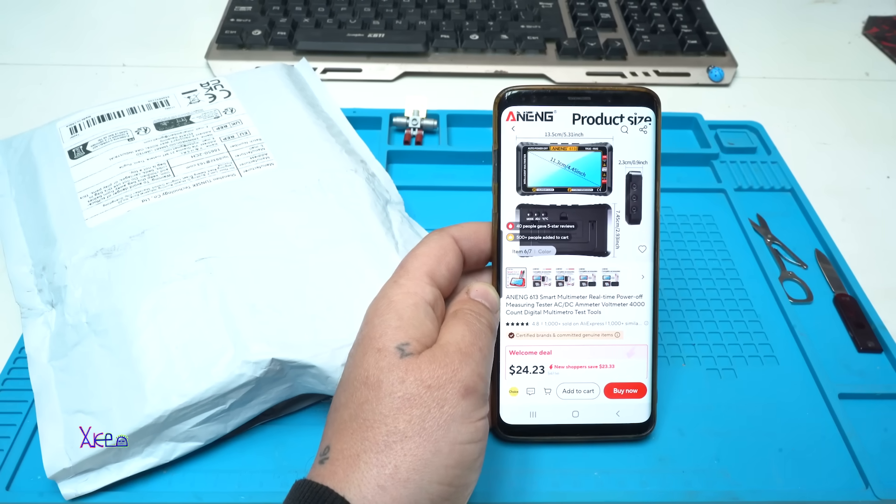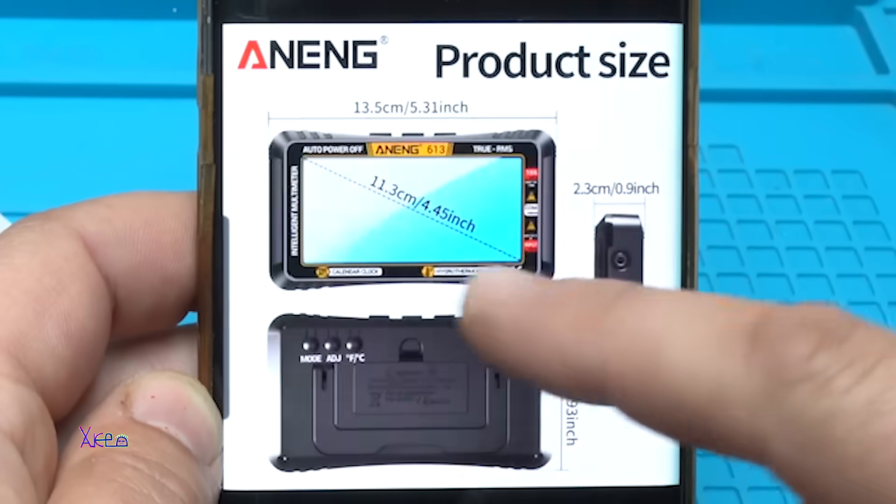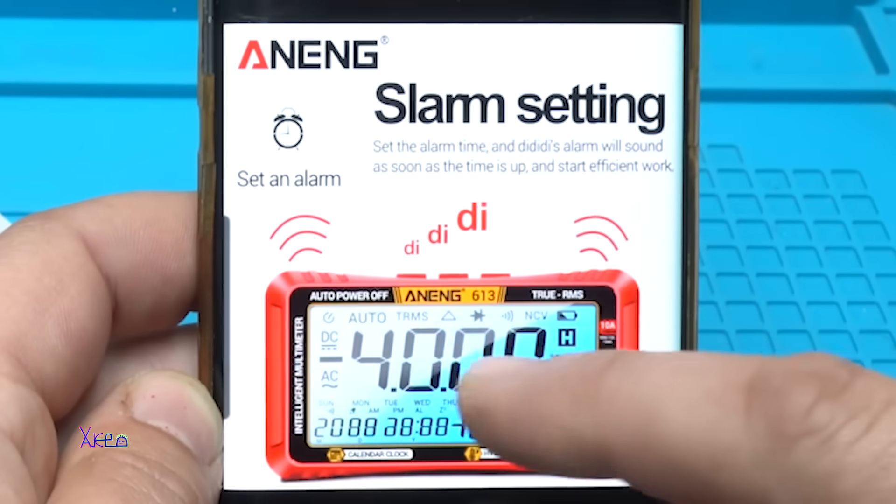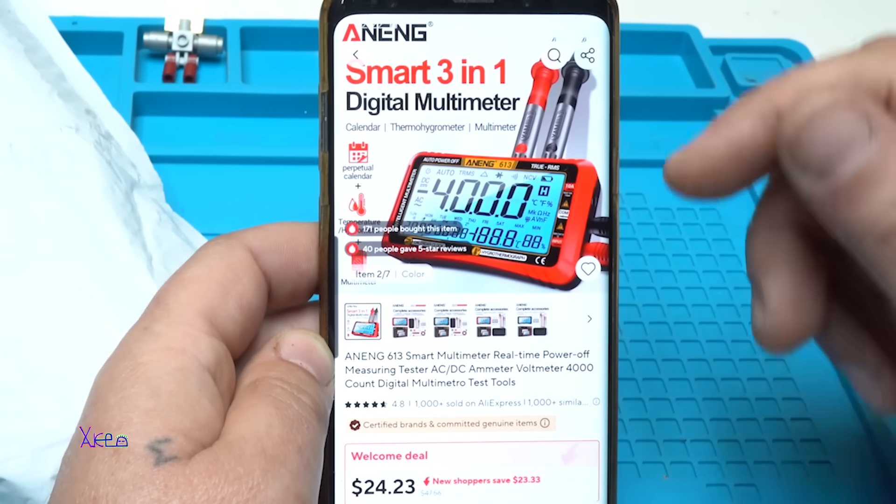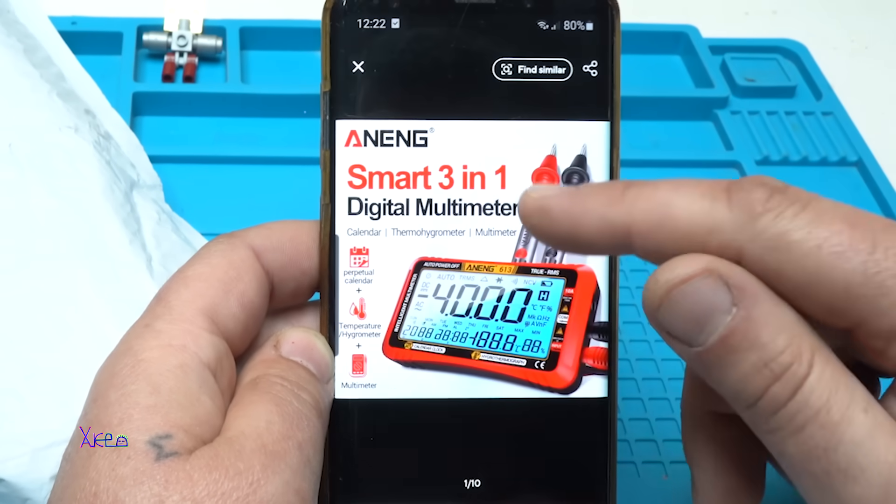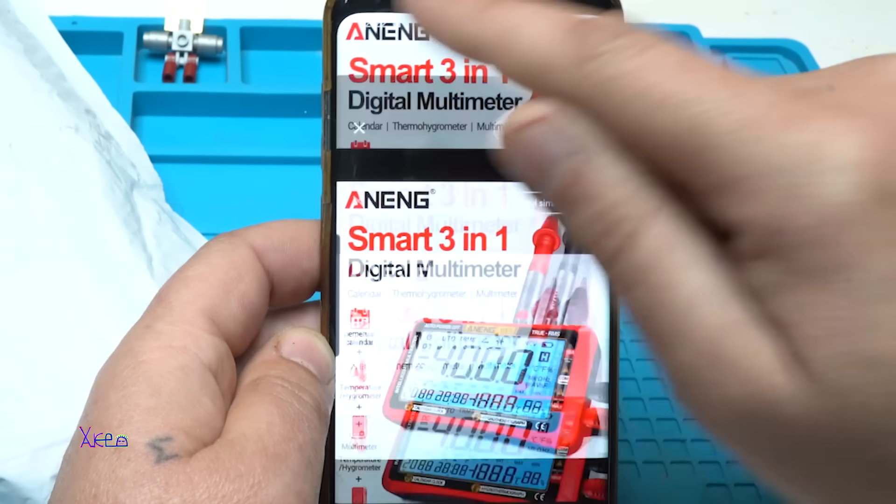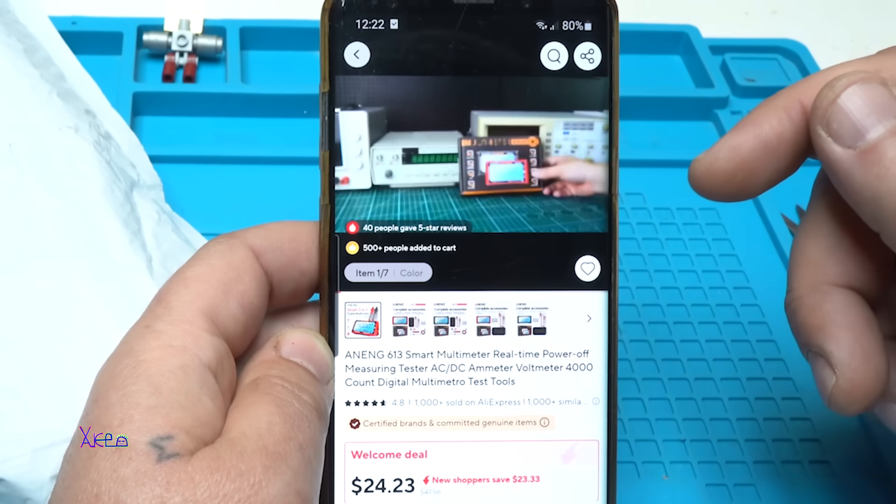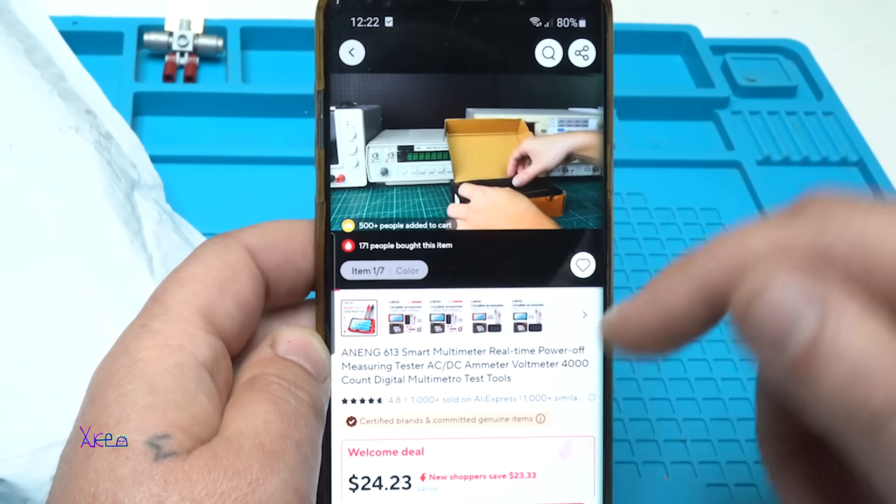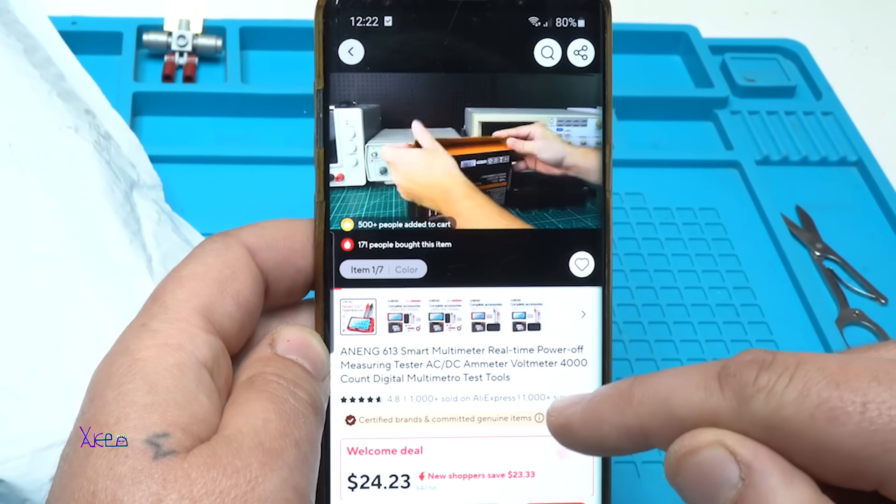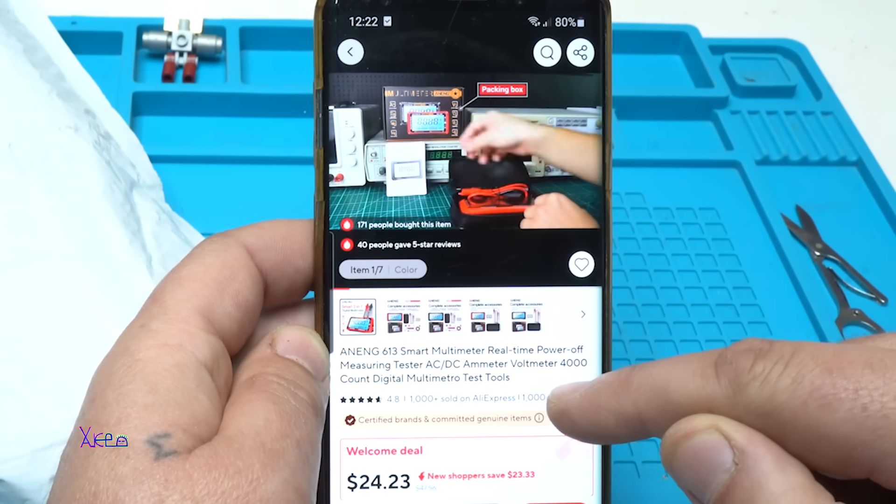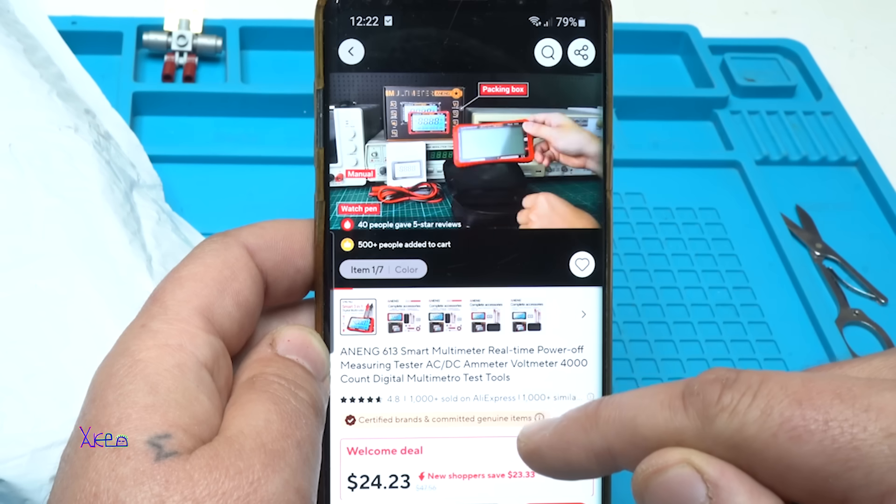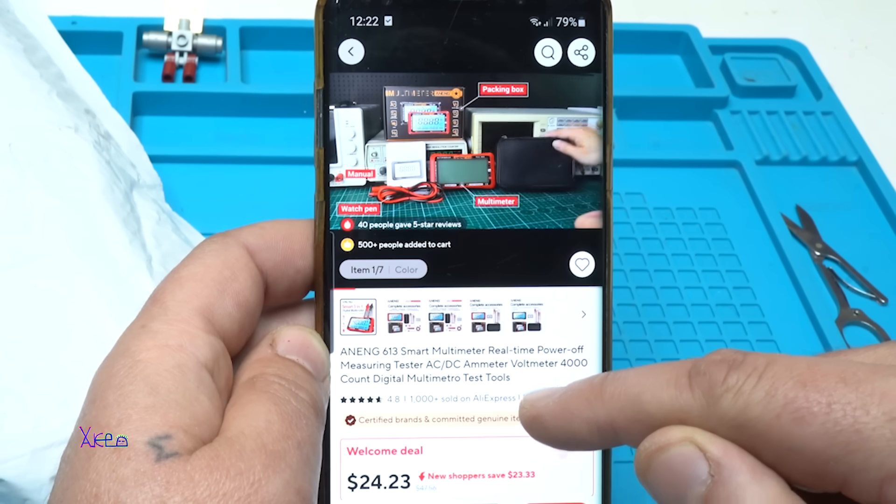Look what I have ordered from AliExpress. I'm excited that I received it. And what is it? Such a big screen. It's an Anang 613 model, smart multimeter, real-time power-off measuring tester AC-DC ammeter, voltmeter, 4000 count digital multimeter test tools.